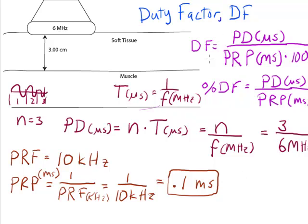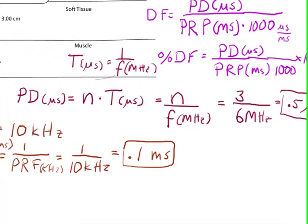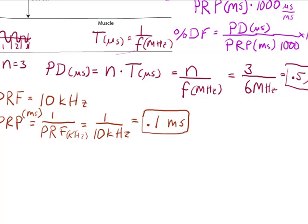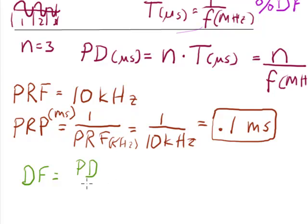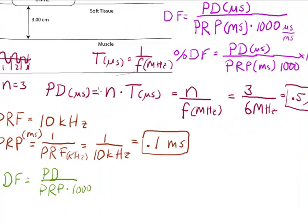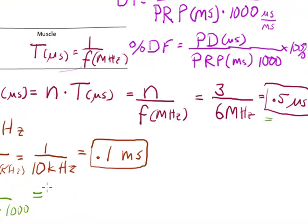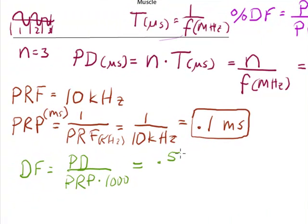Now I can compute my duty factor. The duty factor is equal to the pulse duration in microseconds divided by pulse repetition period in milliseconds times 1000. Plugging in my pulse duration from up here, which was 0.5 microseconds, and my pulse repetition period in 0.1 milliseconds, and adding my conversion factor, 1000 microseconds per millisecond.